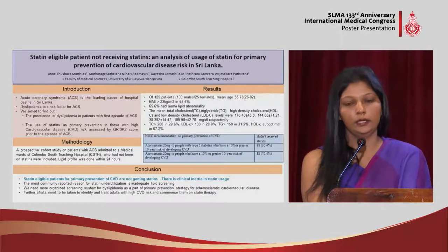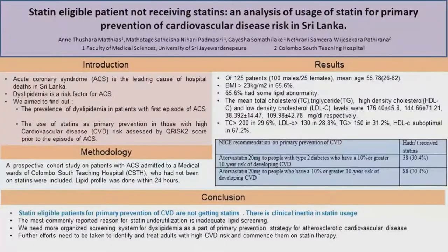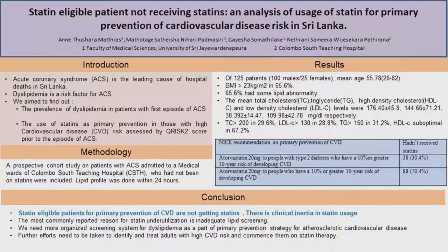70.4% of our population had a QRisk2 score greater than 10. The NICE recommendation is that patients with a QRisk2 greater than 10 should ideally be on 20 milligrams of statins; however, none of them were on statins.